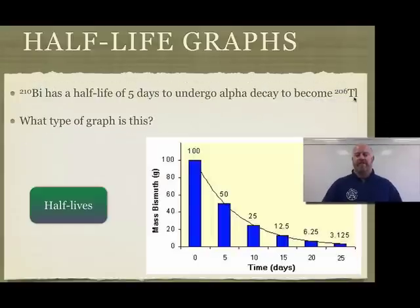When you start to graph half-lives, you see a very common-looking graph that kind of shows up if we go down half-life by half-life. So bismuth-210 has a half-life of five days. It undergoes alpha decay to become thallium-206. So if you look, at day zero, you have 100%, in this case 100 grams, of bismuth. After five days, you have 50. After 10 days, 25. After 15 days, 12.5. Then 6.25. Then 3.125.